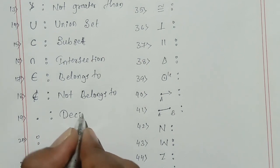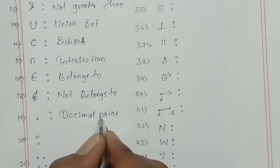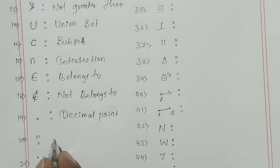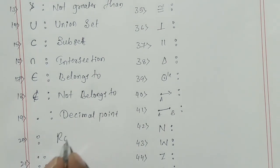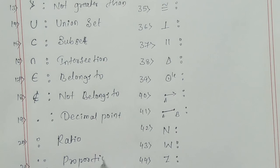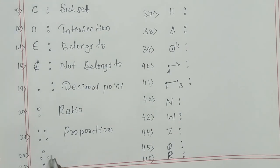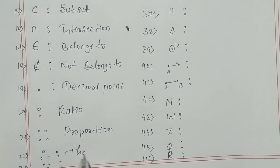This is decimal point, and its meaning is ratio. And its meaning is proportion. So next, this is therefore. This is because.